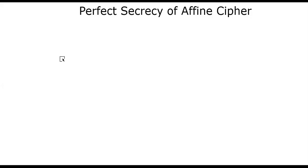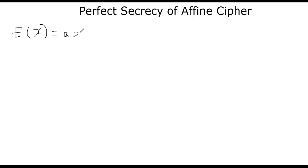So what is affine cipher? Very quickly. We have a message — let's say the message is x. How would we encrypt it? We call the encryption function E(x) by doing a times x plus b in mod m. This is basically the encryption function.